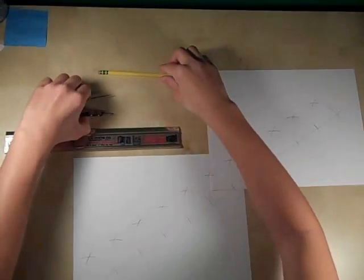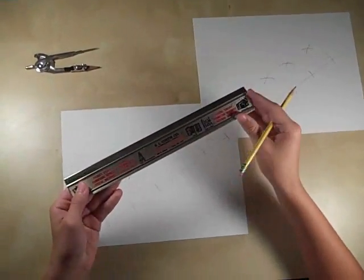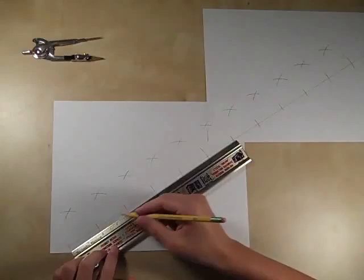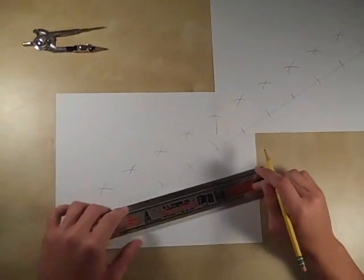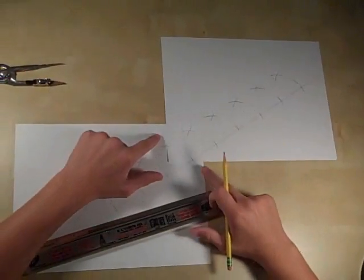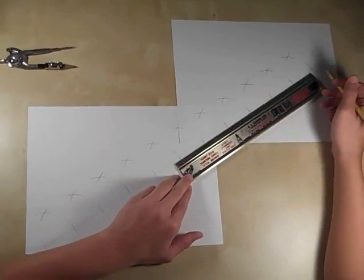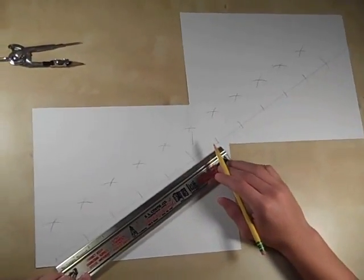So, your first step is going to be use the straight edge and make a straight line on your piece of paper. In my case, I wanted to make an extra long one, so I connected two pieces of paper and extended my line onto the second piece of paper to make it very long.